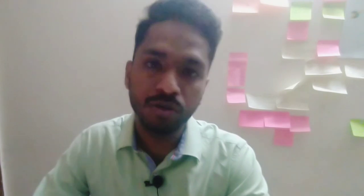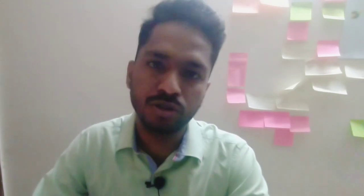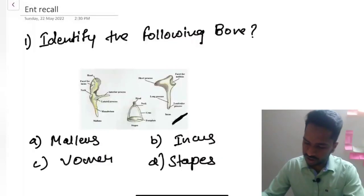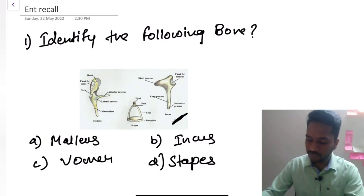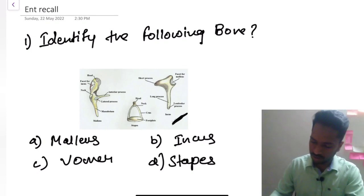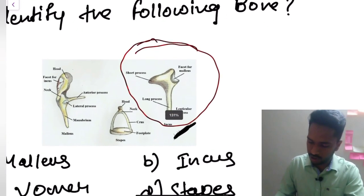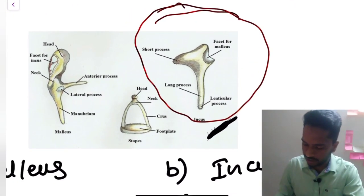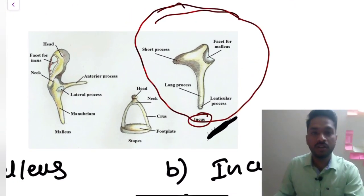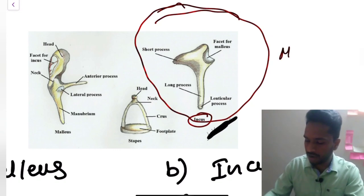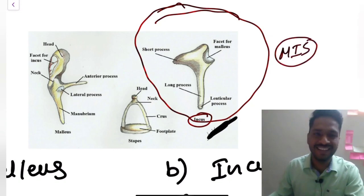Also, those who appeared in NEET should check whether they marked correctly or not. The first question was to identify a bone — this one was the incus. In the middle ear cavity we have three ossicles: malleus, incus, and stapes.